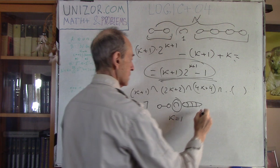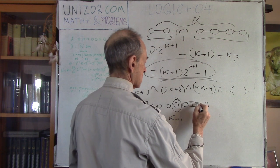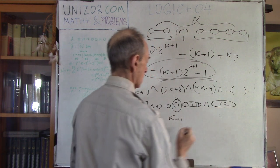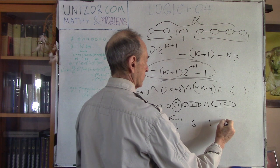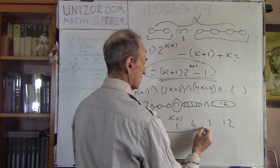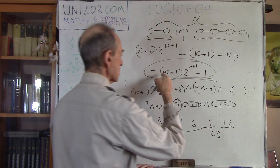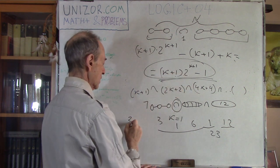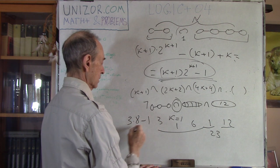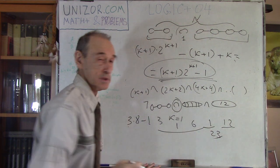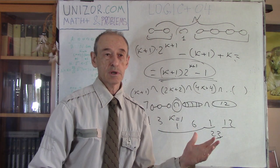When we had two cuts, we had segments of three, one cut, six, one cut, twelve — so three plus one plus six plus one plus twelve equals twenty-three. With K equals two: two plus one equals three, times two to the power three which is eight, minus one equals twenty-four minus one equals twenty-three. The formula is correct, derived from the logic we discussed.